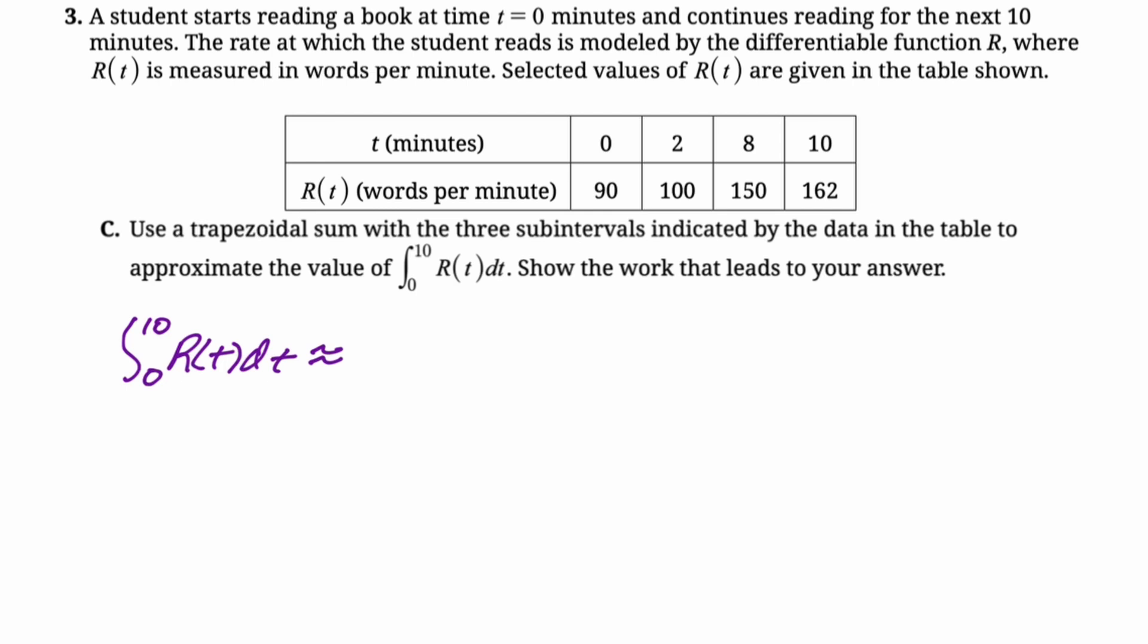So integral from 0 to 10 r of t dt is approximately. Now we're doing trapezoids. So every trapezoid has a one half. And then what we need to do is there's going to be a base. So we'll go from 0 to 2, which is 2. And then, well, actually, I guess you could call that the height and then the sum of the bases.